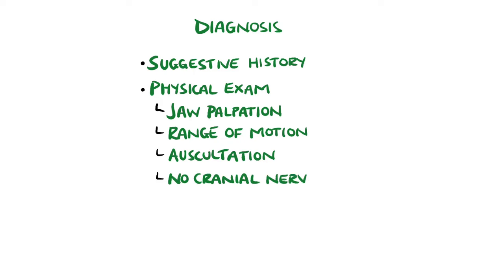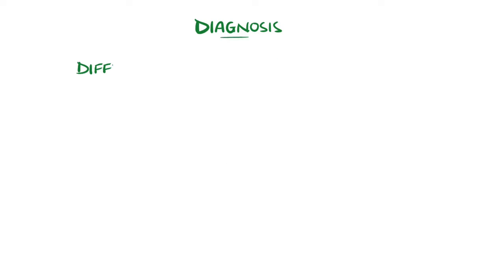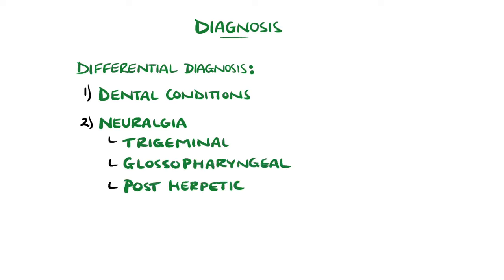The cranial nerve exam should also be unremarkable. In terms of imaging, x-rays including panoramic x-ray are the first-line imaging for evaluation of potential temporo-mandibular joint disorder if the history and physical are not enough. Although CT, MRI, or even ultrasound can also be used to visualize the joint. Differentials of facial pain include dental conditions, various forms of neuralgia such as trigeminal, glossopharyngeal, or post-herpetic neuralgia.